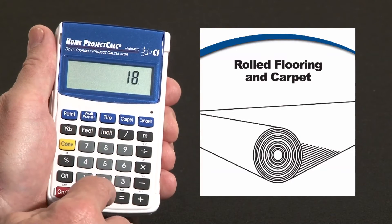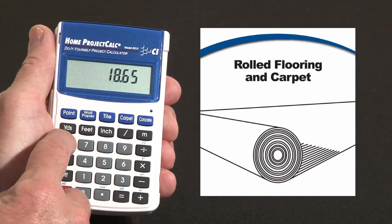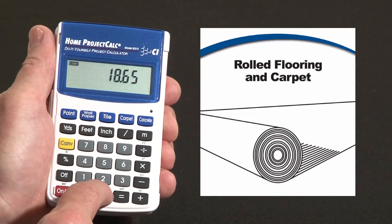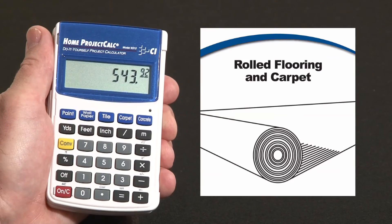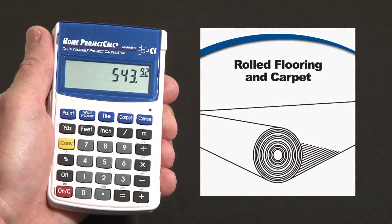So times 18.65. I hit the convert and over the decimal place key, it says cost. This tells us we need about $544 worth of flooring material.